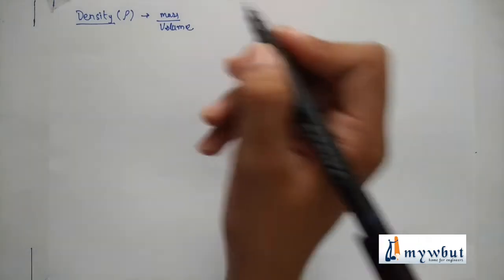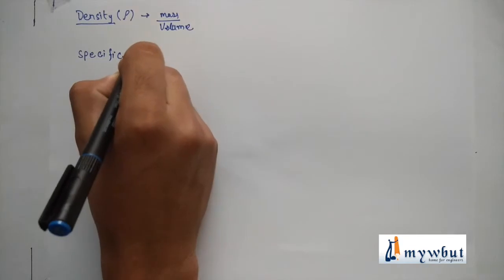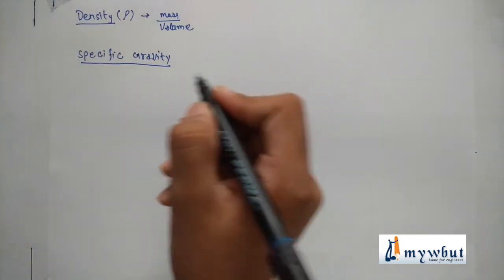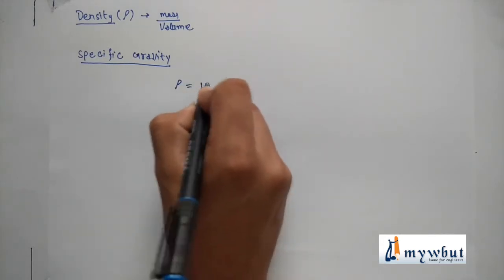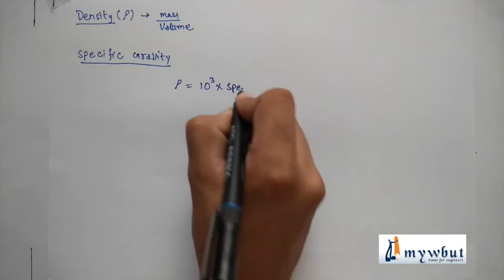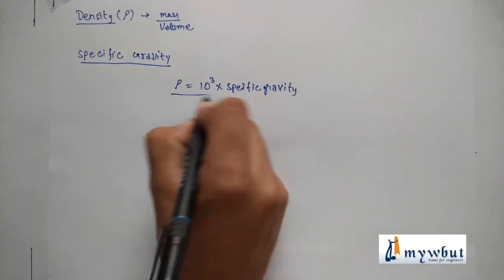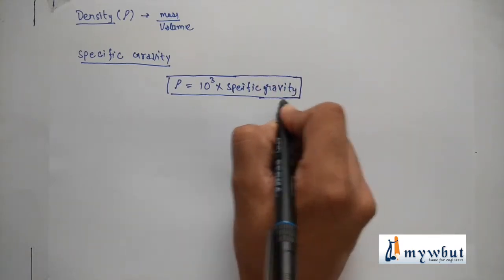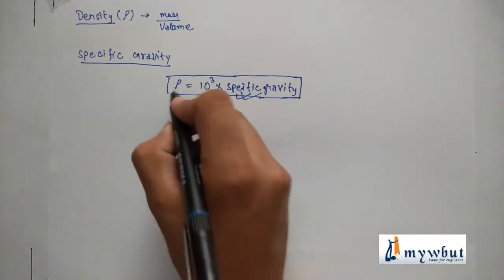Density is denoted by rho and is defined as mass per unit volume. Density is often represented using specific gravity, and the relationship between them is: density equals 10 to the power 3 multiplied by specific gravity. This relationship is very important when solving numericals, because density is often given in the form of specific gravity and must be converted to rho.